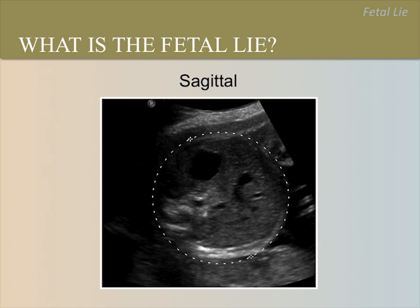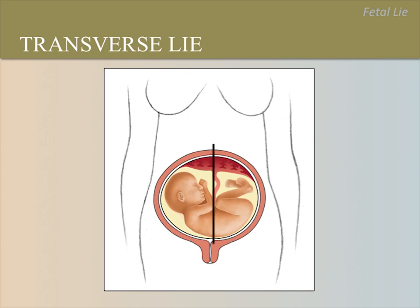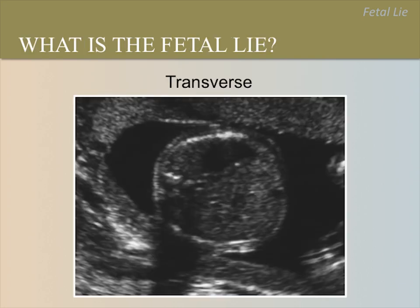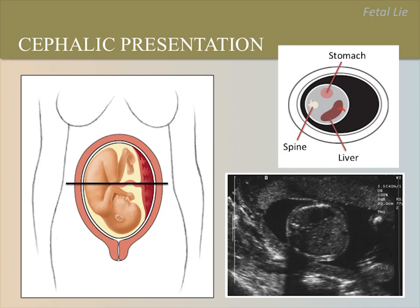This is a sagittal view of the uterus. What is the fetal lie? In this image, we see a transverse or cross-section of the fetal abdomen. We can identify the stomach and umbilical vein. Since this is a sagittal view of the uterus, the fetus must have a transverse lie. This illustration shows how a sagittal slice through the fetal chest and abdomen looks when the fetus has a transverse lie. In the next image, which is in the transverse plane, we can see the fetal stomach and fetal spine, showing that the fetus has a longitudinal lie and cephalic presentation with the fetal spine on the maternal right.